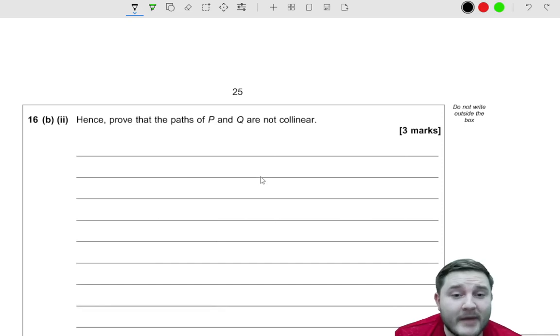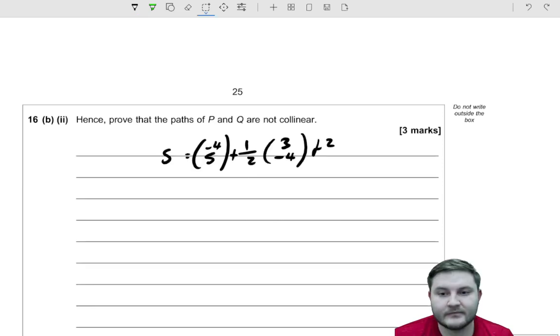Hence prove that the paths of P and Q are not collinear. So because it said hence, I've copied over the equation from the previous page, which took me way more time than I would care to admit.